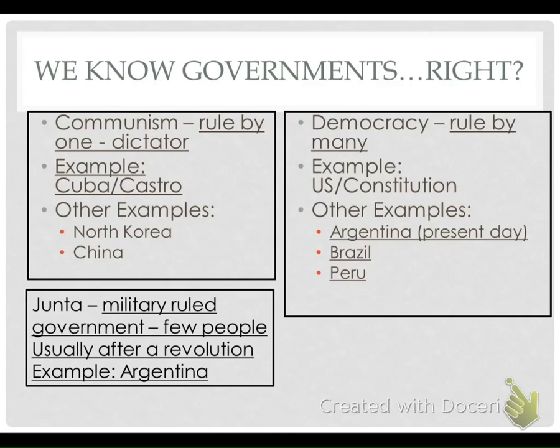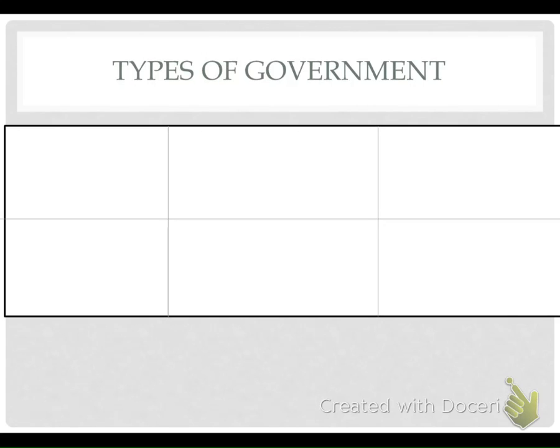Lastly, we have our Junta. This is a military government where few people have control, and this is a government that usually installs itself following a revolution. That's what happened in Argentina.